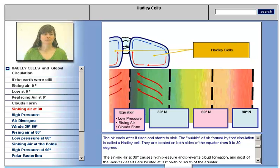The air cools after it rises and starts to sink. The bubble of air formed by that circulation is called the Hadley cell, and they are located on both sides of the equator from zero to 30 degrees.